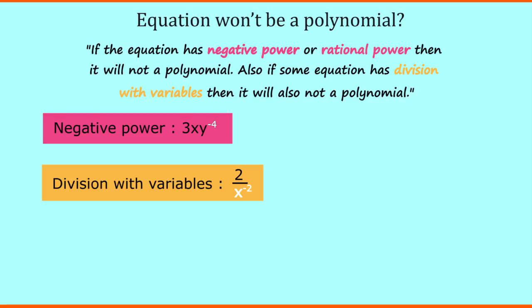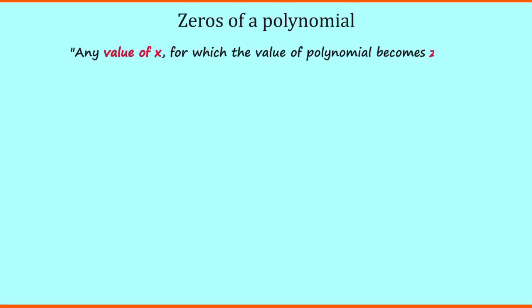Let's jump to the next concept that is zero of a polynomial. The zero of a polynomial is defined as any value of x for which the value of polynomial becomes 0. Now to understand this zero of a polynomial, let's see some examples.